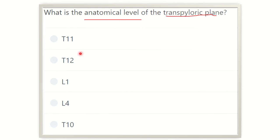Here are the options: thoracic vertebral level, thoracic 12 vertebral level, lumbar 1 vertebral level, lumbar 4 vertebral level, and thoracic 10 vertebral level.